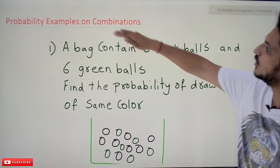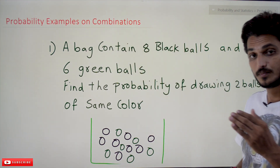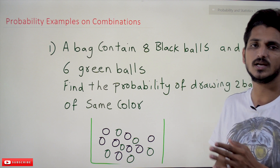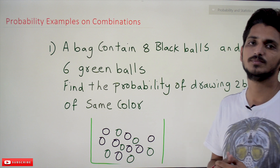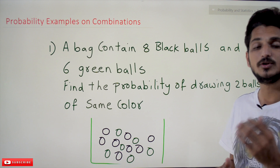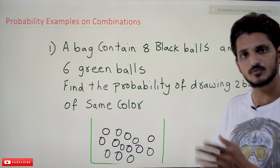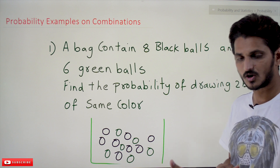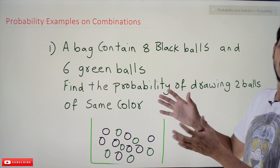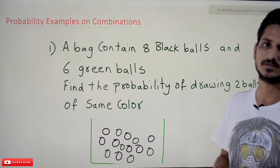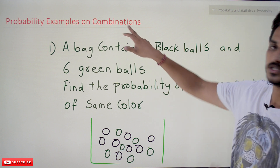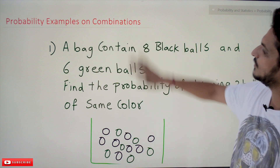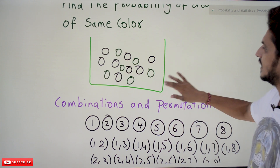In order to do this type of problems we will use combinations logic. You know from plus one and plus two we have discussed permutations and combinations. If you are not good at what permutations and combinations means, please visit our playlist on aptitude for placements and competitive exams. We are going to refresh the concept of combinations once before going into the probability subject.